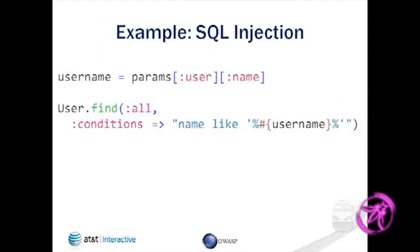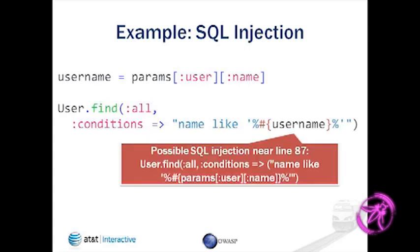Here's another example. We're doing a database query and we're just going to drop this variable right in. We basically have a local variable, we're assigning a query parameter to it, and dropping it into our SQL statement — so we know this is wrong. You should be doing a parameterized query. Brakeman notices this, you'll get a warning, and you can see the actual value of the variable is what Brakeman will report.